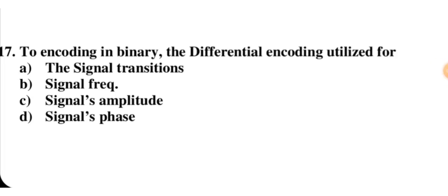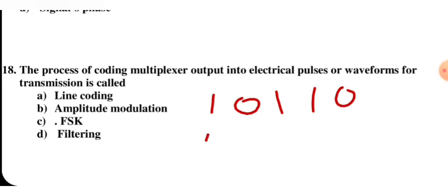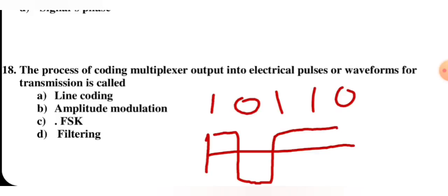In binary encoding, differential encoding is utilized for signals based on amplitude, not phase, because whatever amplitudes we have, we check them for phase — it is basically about amplitude. Line coding means converting the multiplexer output into electrical pulses or waveforms for transmission. For example, 1 0 1 1 0 — we convert this to electrical pulses: amplitude for 1, negative for 0. So A is the correct option.